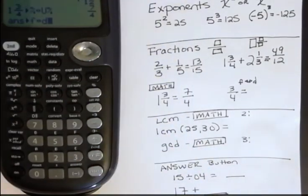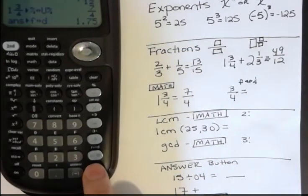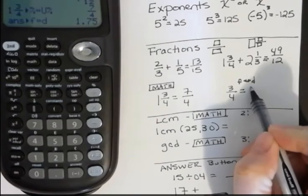And it changes it either from a decimal to a fraction or back and forth. Fraction to a decimal, hit enter, is 1.75 for our answer.